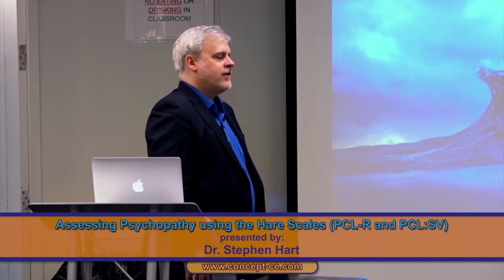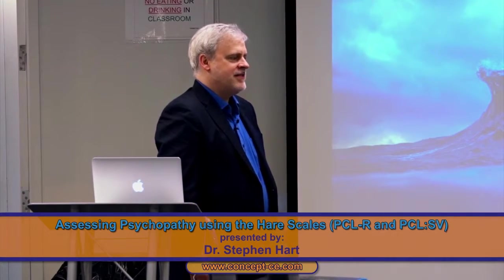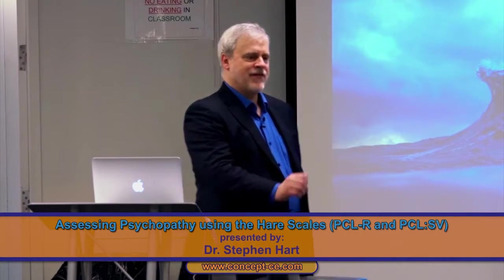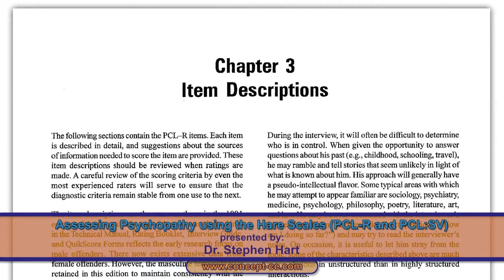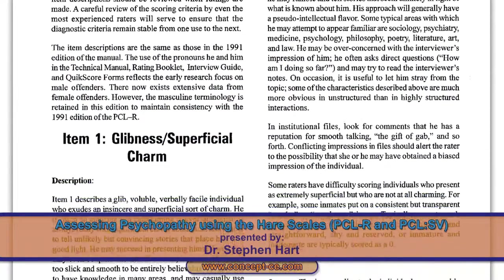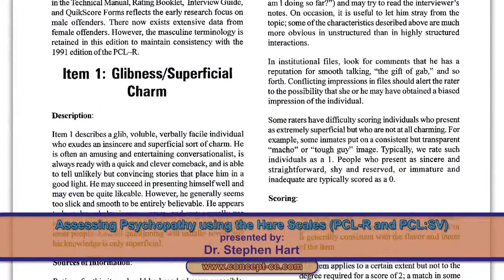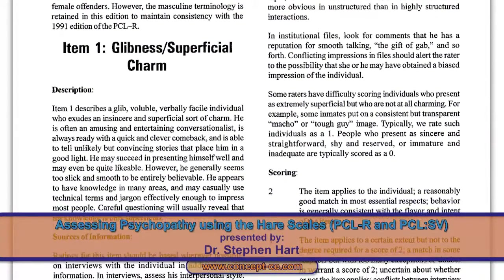So we're going to focus on the PCL-R. If you've got that handout in front of you, there are pages with the item descriptions. We're going to start off by talking about Item 1: glibness and superficial charm. First we'll go through the arrogant interpersonal style items.